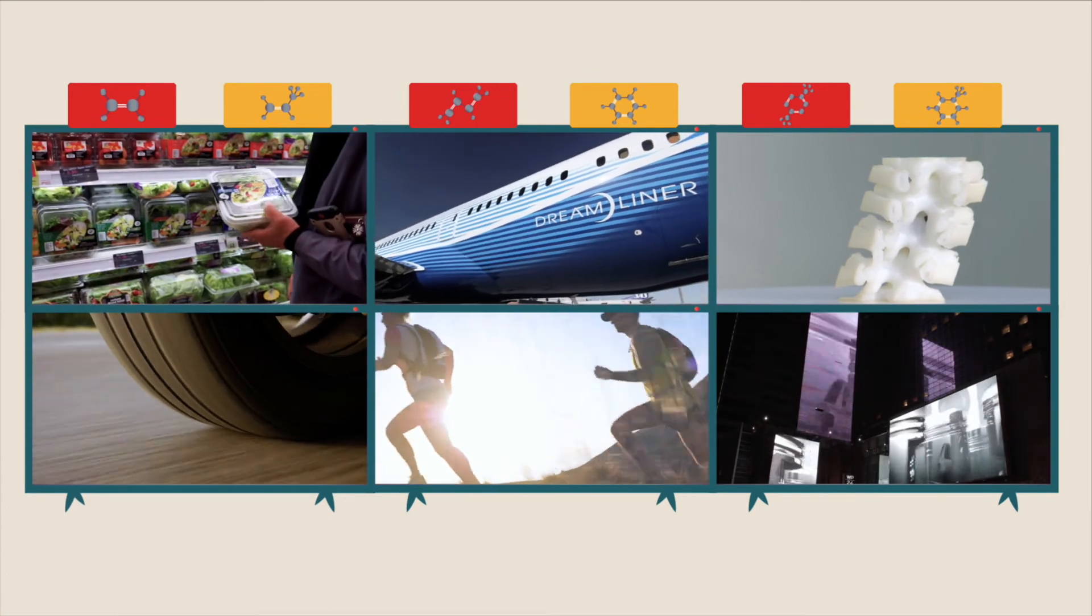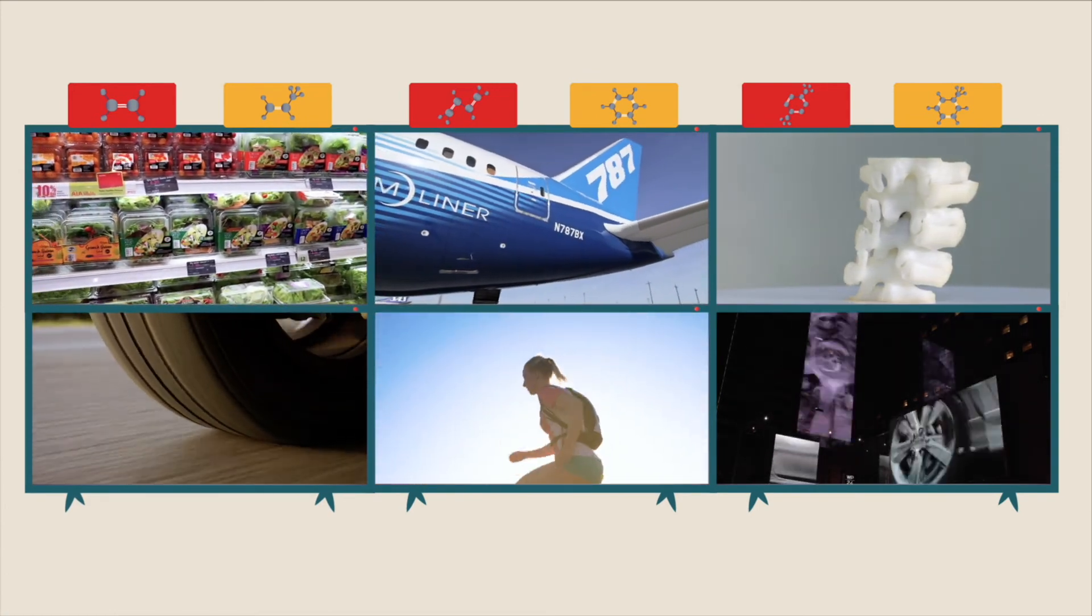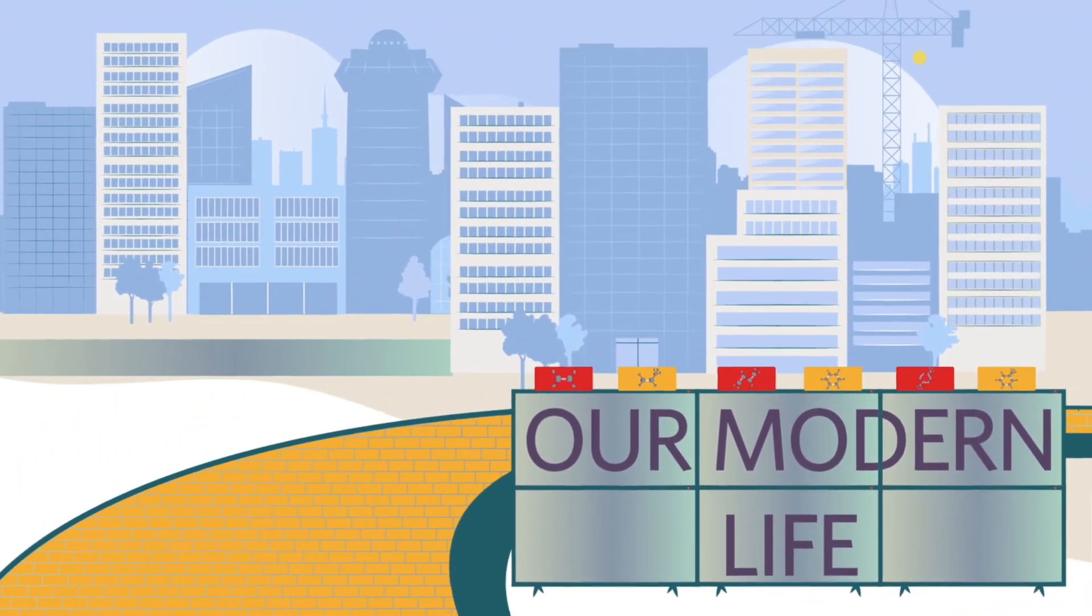Ethylene, propylene, and butylenes – benzene, toluene, and xylenes – the six building blocks of our modern – and happier – life.